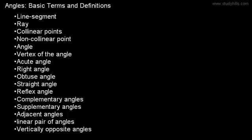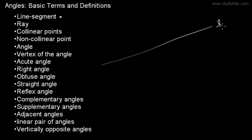Angles are associated with many terms. One of these is line segment — it is part of a line with two endpoints. For example, we have one line L and on this line we have two points A and B. Then AB is called a line segment.